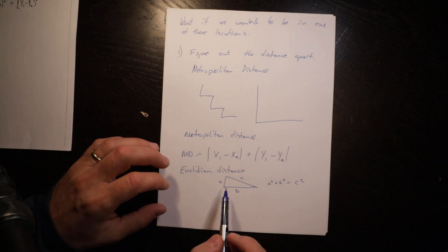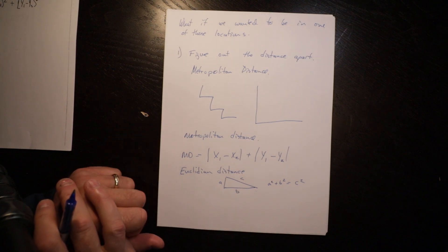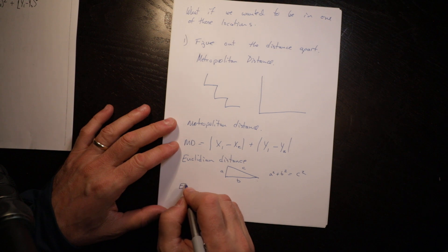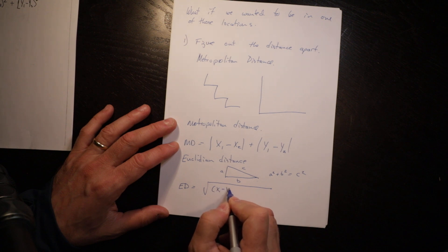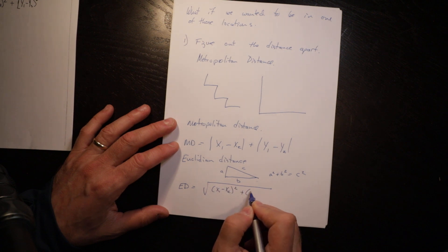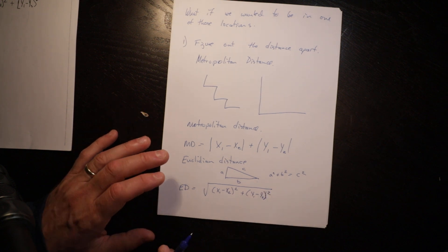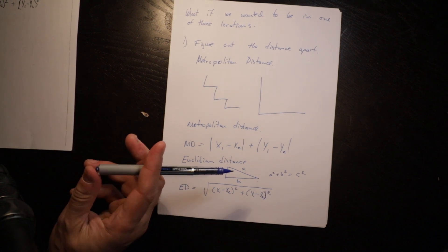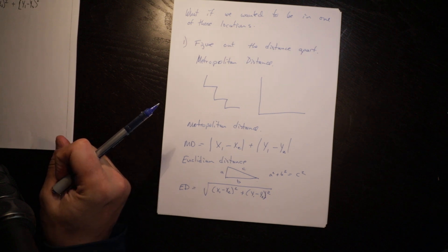In this case, the metropolitan distance is here and the Euclidean distance is as the crow flies distance. The Euclidean distance equals the square root of (X1 minus X2) squared plus (Y1 minus Y2) squared. In this case we don't need the absolute value because the square of a negative number is the same as the square of the equal positive number.